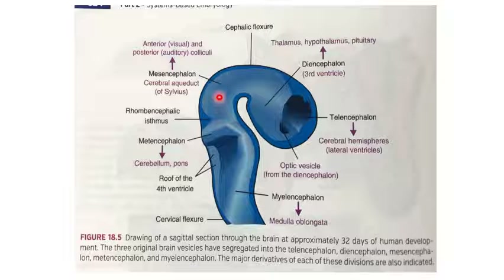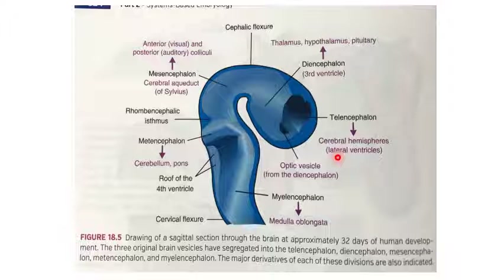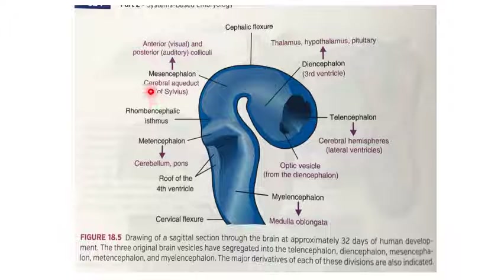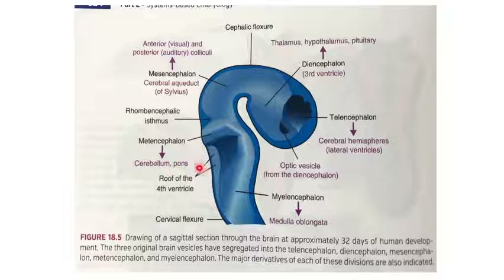In the diagram: the prosencephalon divides into telencephalon and diencephalon. There are two telencephalon vesicles forming the right and left cerebral hemispheres, with the cavity forming the lateral ventricles. The diencephalon cavity forms the third ventricle. The mesencephalon forms the midbrain, with its cavity forming the cerebral aqueduct of Sylvius. The rhombencephalon divides into metencephalon — forming the cerebellum and pons — and myelencephalon — forming the medulla oblongata. The cavity of the rhombencephalon forms the fourth ventricle.